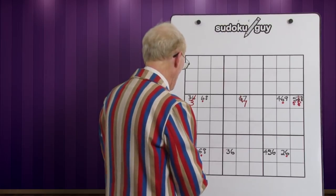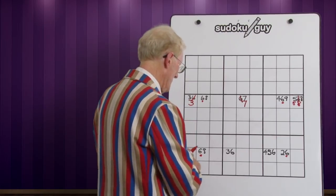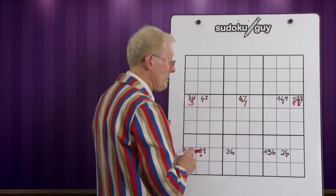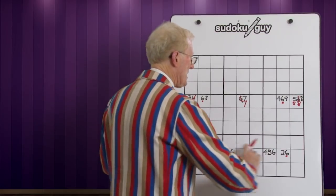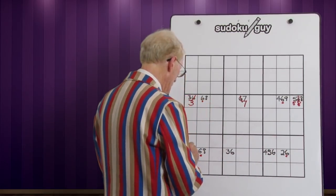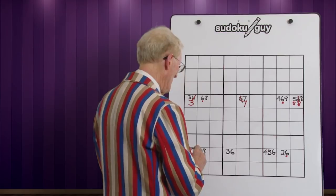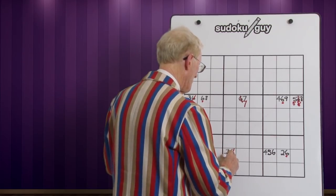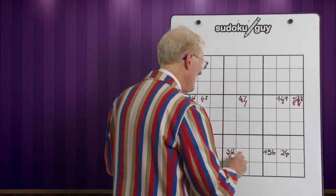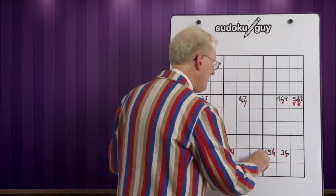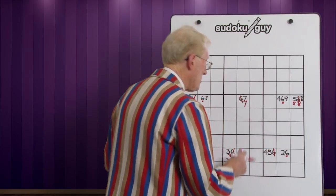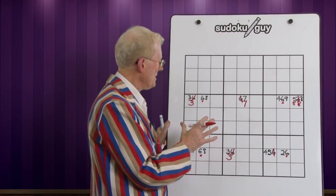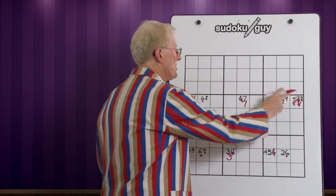So we got rid of a lot of little numbers. Remember, it's the columns that enable us to get rid of sixes in the rows this time. This six can go, so you're left with a one-nine. This six can go and you're left with a three. This six can go and you're left with a four-five. That's the principle we use in an X-Wing to eliminate little numbers.